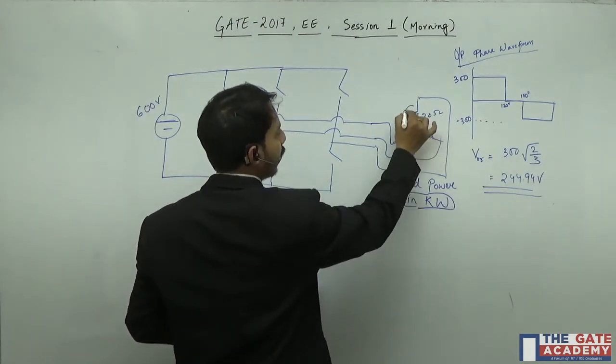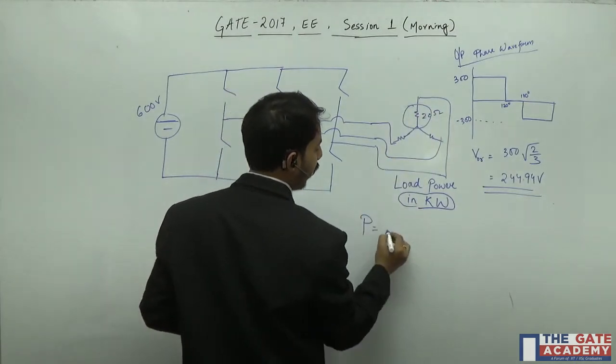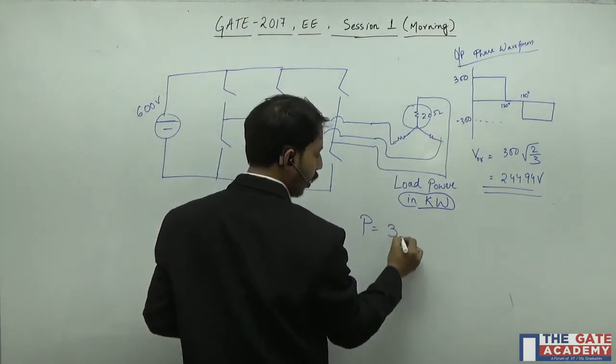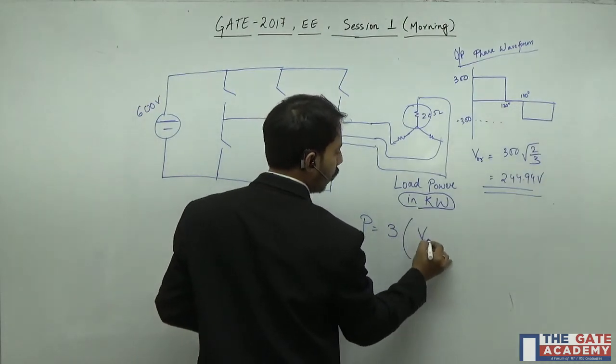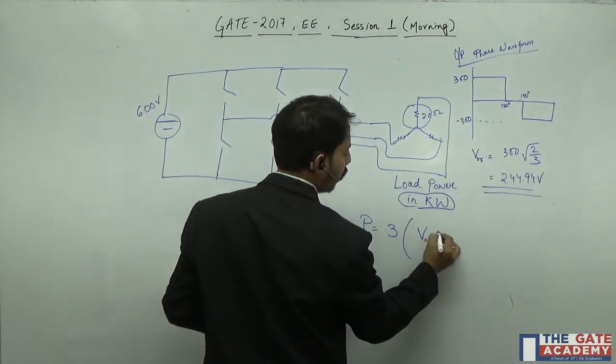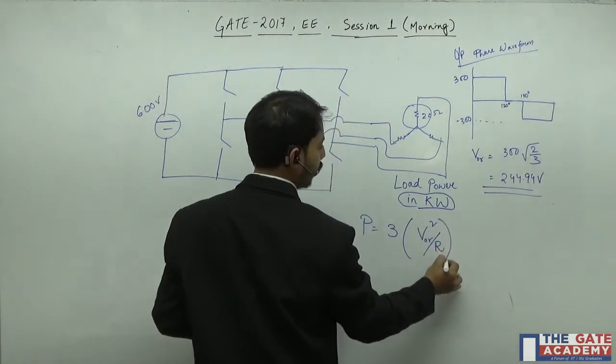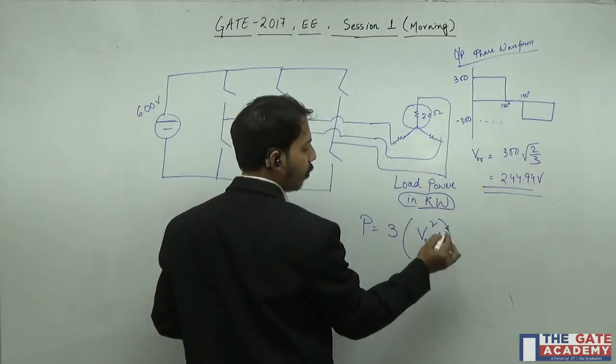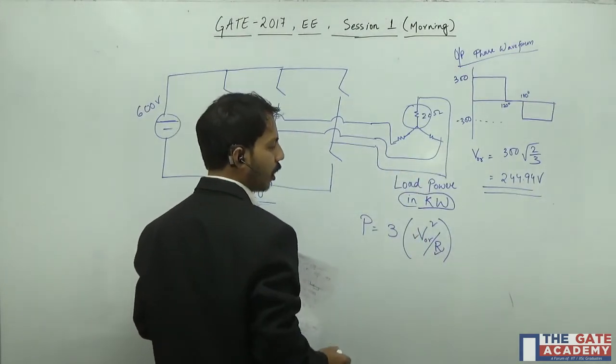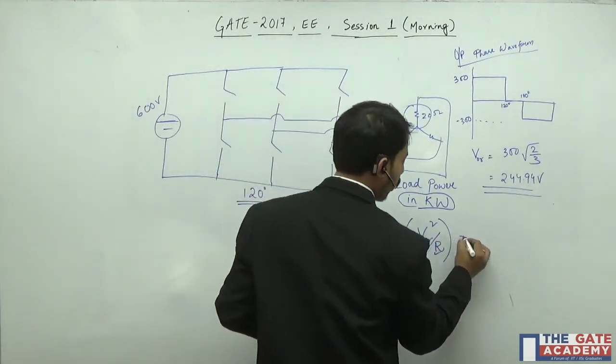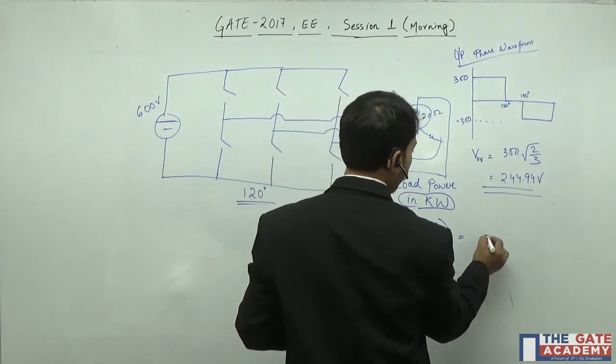Since it is resistive load I can say that the total output power will be 3 times V_RMS per phase all squared by R per phase. Now we know the value of R per phase, we know the value of output RMS voltage per phase. We'll put these values and calculate, we'll find it at 9000 watt.